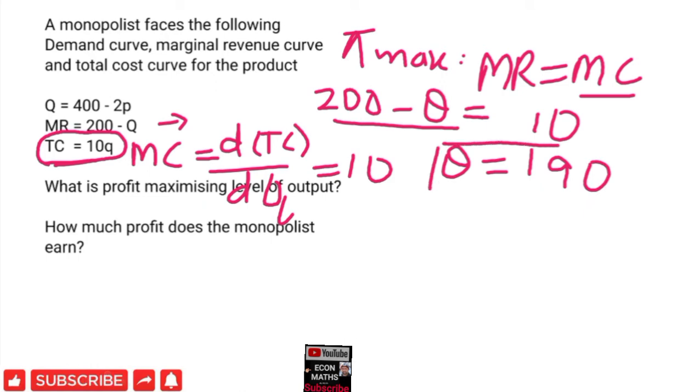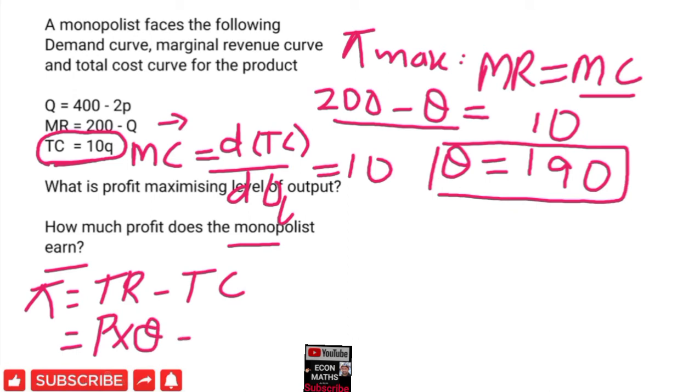The second part asks: how much profit does the monopolist earn? For that we know that profit equals total revenue minus total cost. Total revenue is price times quantity, P × Q, minus total cost which is 10Q.